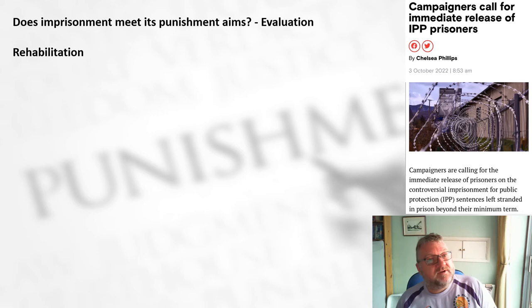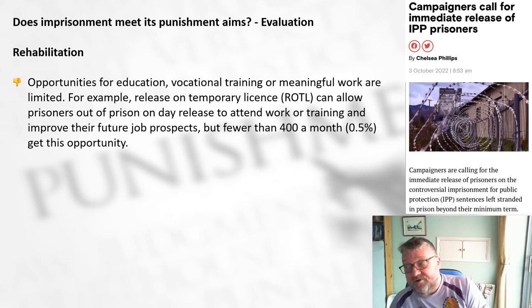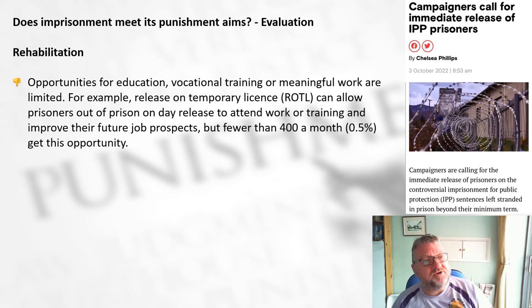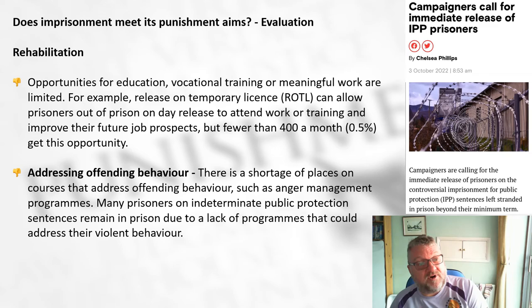Opportunities for education, vocational training, and meaningful work in prison are limited. Fewer than 400 prisoners a month - just 0.5% of the prison population - get temporary release to attend work or training. There is also a shortage of places on courses addressing offending behaviour such as anger management, and many prisoners on indeterminate public protection sentences remain inside due to a lack of programmes addressing their violent behaviour.